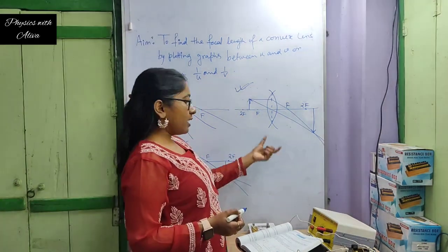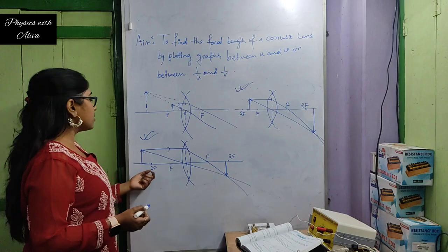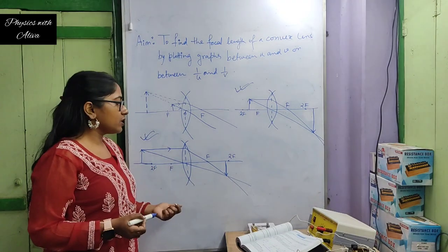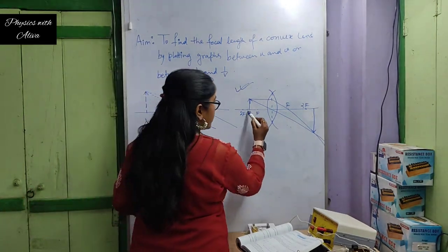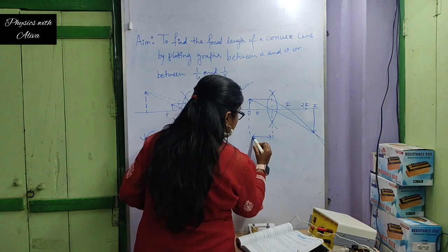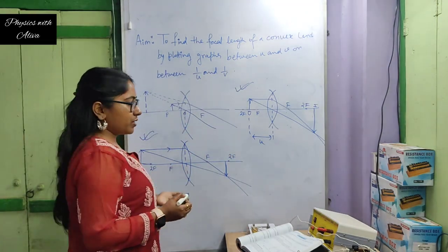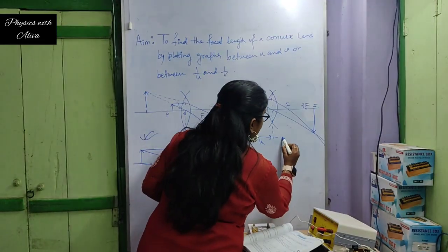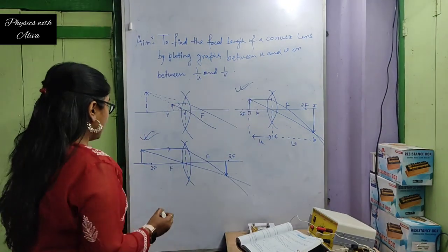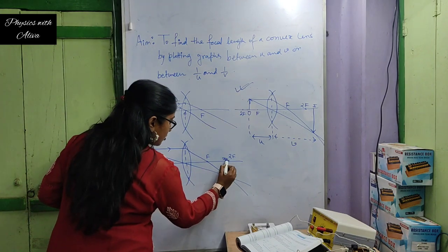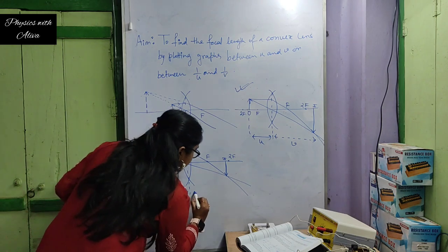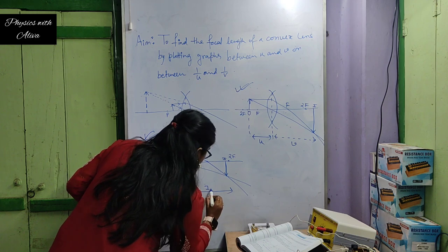In this practical we will use these two cases: placing the object between f and 2f, and placing the object beyond 2f. In the first case the image forms beyond 2f; in the second case it forms between f and 2f. The distance between the object and the lens is u, and the distance between the image and the lens is v.